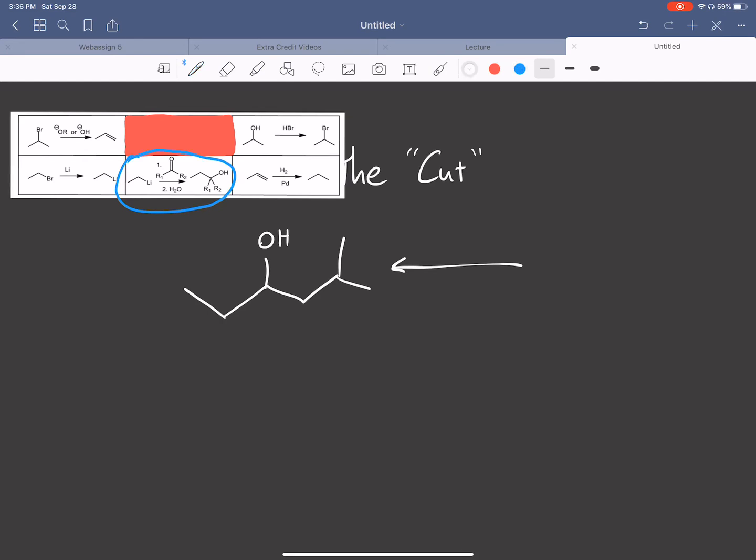So remember when we do synthesis, we're going to want to go backwards. It's always usually easier. And so we can see on the right-hand side, we have an OH, and it's on a carbon with essentially three R groups. One of them is a carbon chain. The other two could be either hydrogens or other carbon chains.